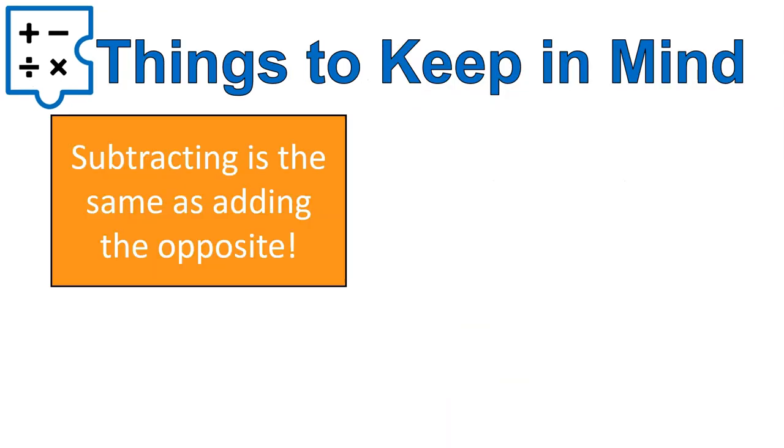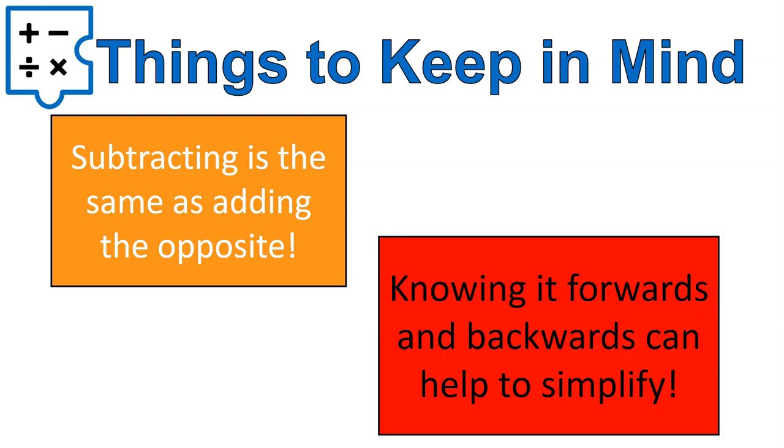So a couple things to keep in mind. Subtracting is the same as adding the opposite. You can change any subtraction expression into being an addition expression by just adding the opposite. Knowing it forwards and backwards can actually help you when you're trying to simplify expressions. When we get into variables and other things you will start to see oh I can change this and make it easier if I know these rules. So the rules themselves may seem abstract right now but if you practice them and learn them you can definitely simplify things moving forward. I hope that lesson was helpful for you. Have a wonderful day.